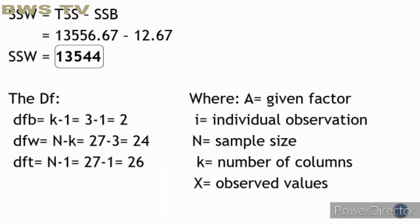Now look for SSW. To find SSW, you subtract TSS minus SSB: 13,556.67 minus 12.67, which gives SSW equals 13,544. Now look for the degrees of freedom. The formula for DFB is K minus 1. The formula for DFW is N minus K. The formula for DFT is N minus 1. Substituting: 3 minus 1 equals 2, which is your DFB. 27 minus 3 equals 24, which is your DFW. 27 minus 1 equals 26, which is your DFT.